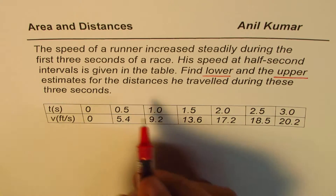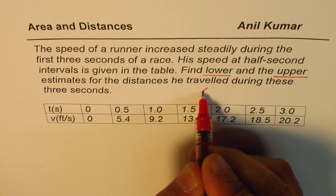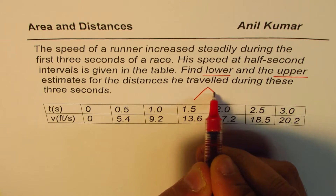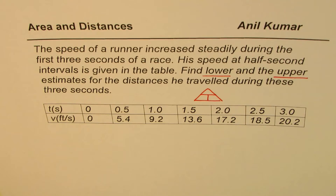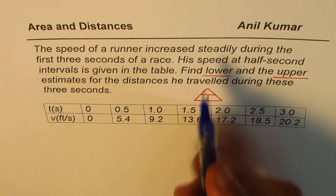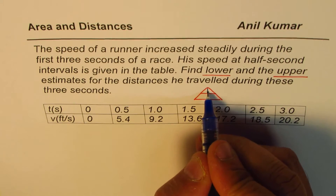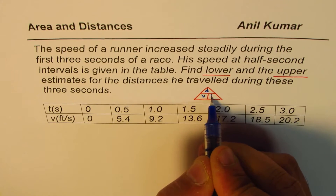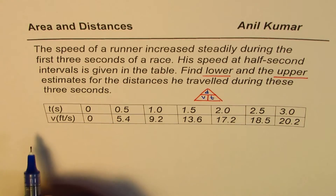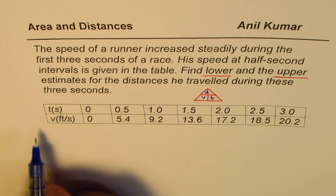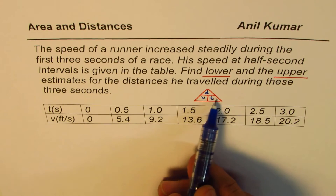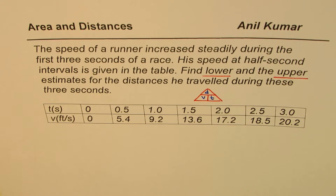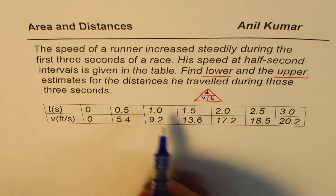Let me sketch a triangle to help remember how distance, speed, and time are related. Distance equals velocity times time. So the distance traveled is essentially the product of velocity and time.